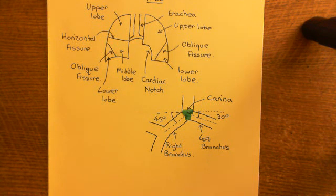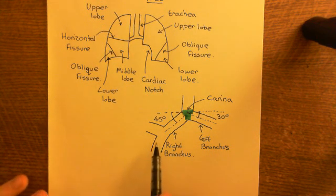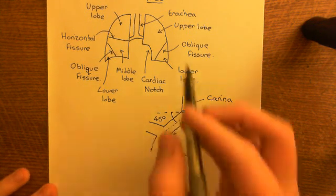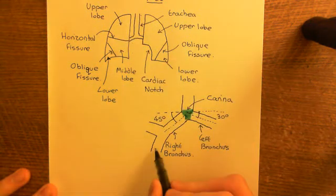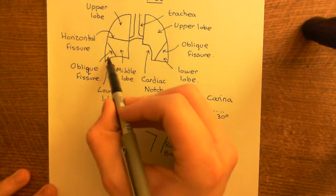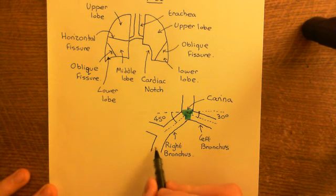Welcome to this next video in which we're discussing the tracheobronchial tree. We've discussed that the right bronchus is going to split into two lobar bronchi when it gets into the right lung. The branch up here is going to supply the upper lobe of the lung, and the branch down here is going to supply the two lower lobes — the middle and the lower lobe. The branch that supplies the middle lobe will branch off, and we'll show that in a moment.